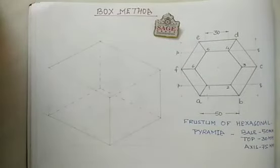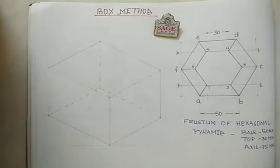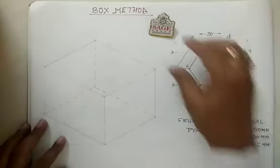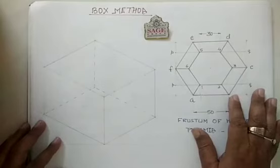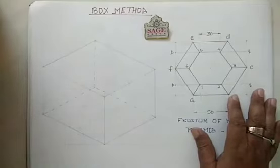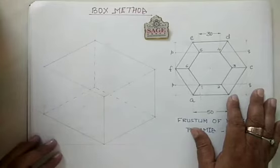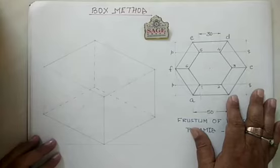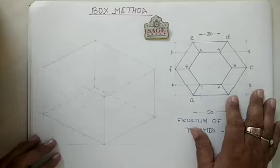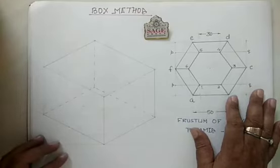Hello students, here I am with another problem on isometric projection using the box method. As already discussed, there are three solids — cube, square prism, and cuboid — all having lines as isometric lines. Just as in planes we bound a rectangle or square inside a rectangle, when drawing the isometric of a solid we bound that solid inside a cuboid.